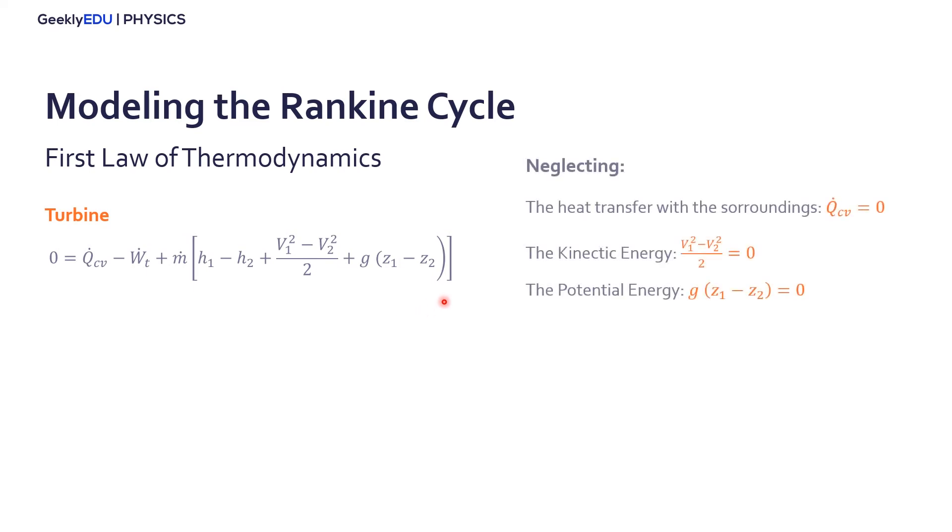Well, for the turbine, we are neglecting the heat transfer with the surroundings. So the heat transfer from the control volume, the turbine, is zero. We're also neglecting the kinetic energy, there's not much difference between the inlet and outlet velocities, and neglecting the potential energy. So, if we add these considerations here, we find this formula for the turbine work. It's just the mass flow times the difference in enthalpy.